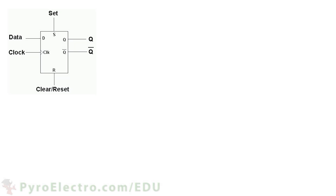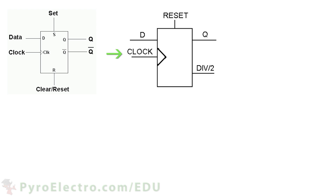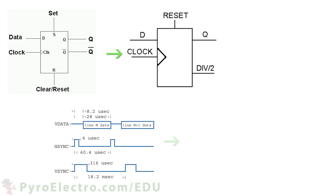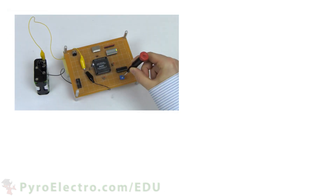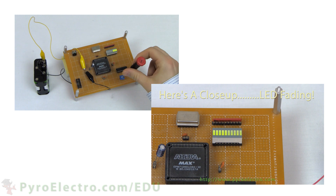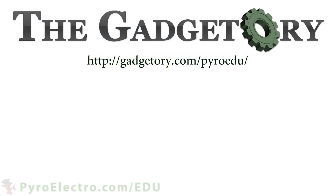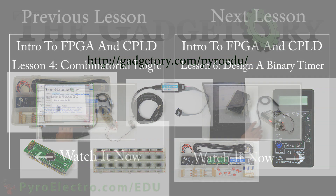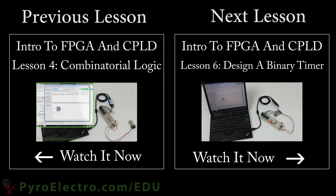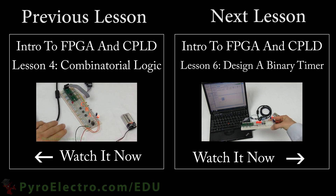In this lesson, we explored the procedural logic power of CPLDs and FPGAs to take an element like a D flip-flop, which behaves in a procedural and sequential manner, and customized it for our own specific needs into a logic element with a clock divider inside of it. This ability to use a clock signal combined with customizable procedural logic is one of the things that makes CPLDs and FPGAs so powerful, allowing them to output specifically timed signals, for example, video signals to an LCD. In the next few lessons, we'll explore this power to keep track of timing in further detail. All parts in this online course were provided by the Gadgetory. Visit them at gadgetory.com/pyroedu. Now that we've been introduced to procedural and combinatorial logic, it's time to see how we can keep track of timing by designing a binary timer.